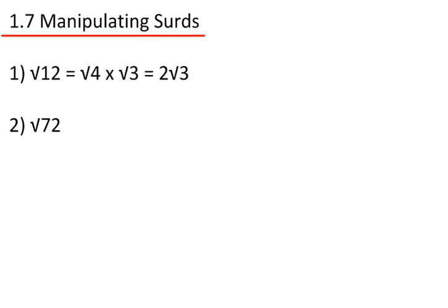For root 72, the largest square number that goes into 72 is 36, giving me root 36 times root 2. The square root of 36 is 6, so that gives me 6 root 2.